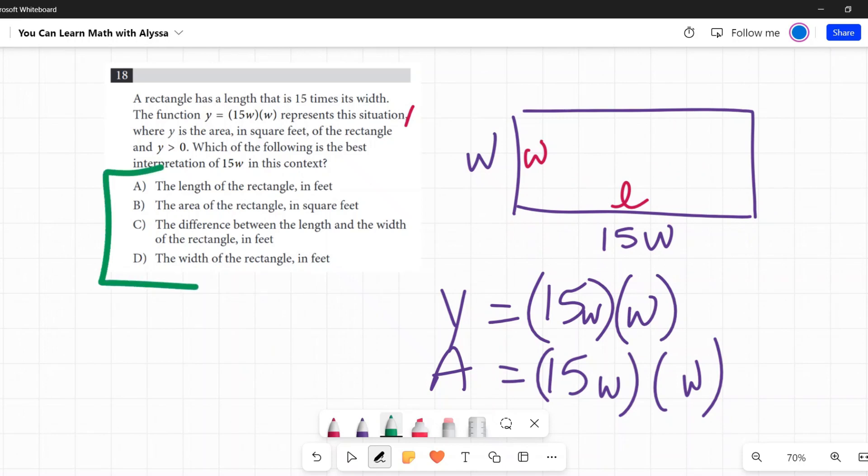So look at our options. A, the length of the rectangle in feet. This is the third time that we've had these which of these is best questions. So the length of the rectangle in feet, right off the bat I'm like, that looks right. I think that's right. Always a good idea to read through all four of them though.